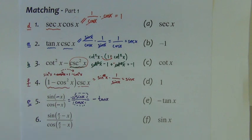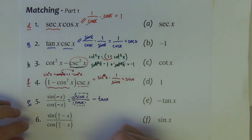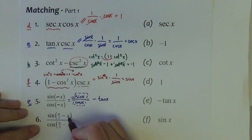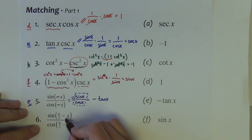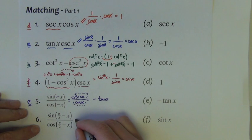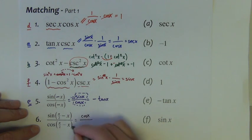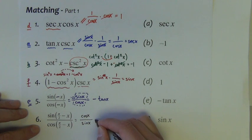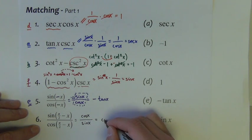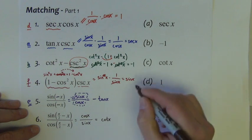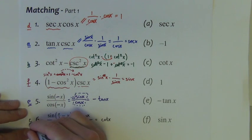The last one has to be c. Only one set of identities looks like this — the cofunction identities. Sine of pi over 2 minus x is cosine x, and cosine of pi over 2 minus x is sine x. So cosine divided by sine — there is a quotient identity telling us that is cotangent x. So that is c.